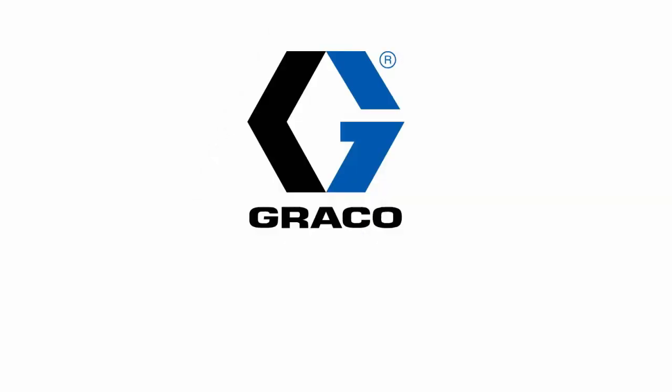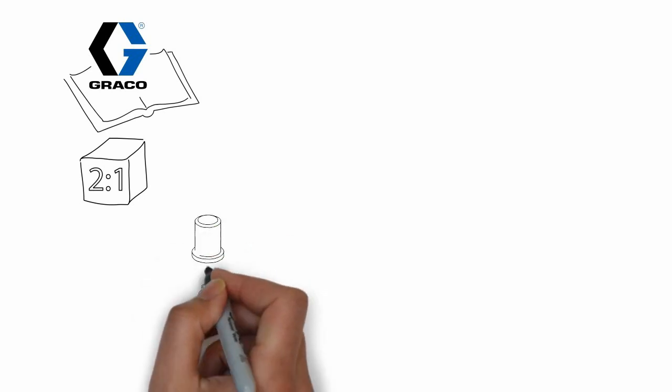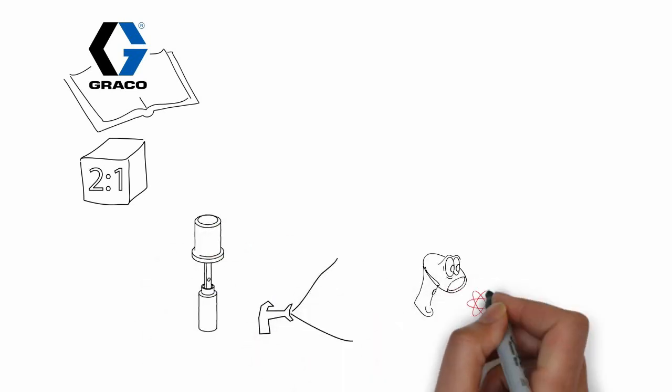Let's do another, more involved, Graco-ized example that continues to build on our color change story. Here, we have a proportioner, pumps, gun, scanner, and robot.